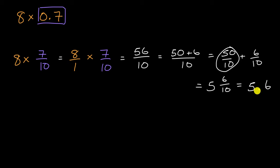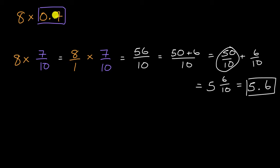It's always good to do a little bit of a reality check when multiplying decimals. Seven-tenths is a little bit less than one, so if we're multiplying eight times something a little bit less than one, we would expect the product to be a little bit less than eight. So 5.6 makes sense.